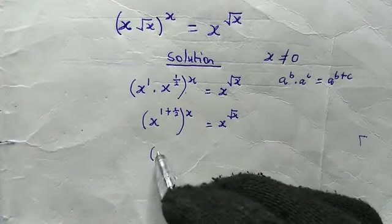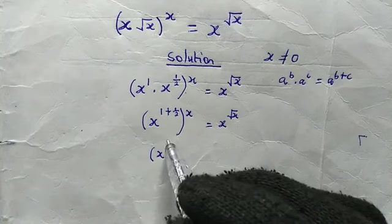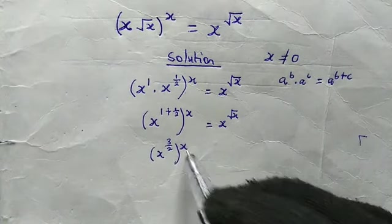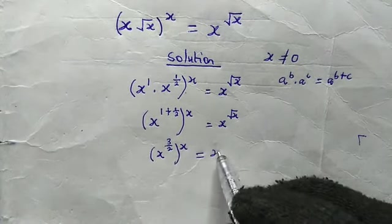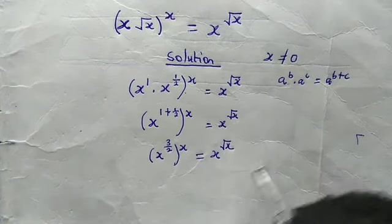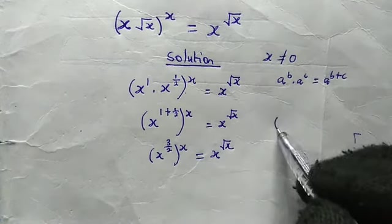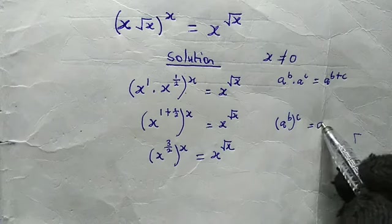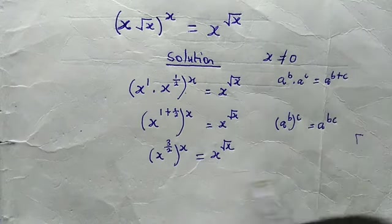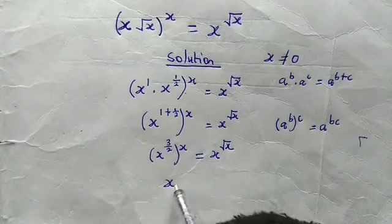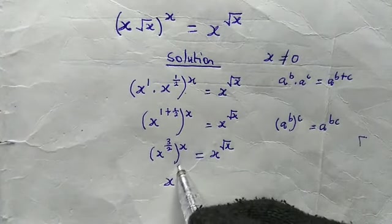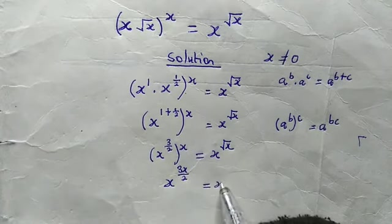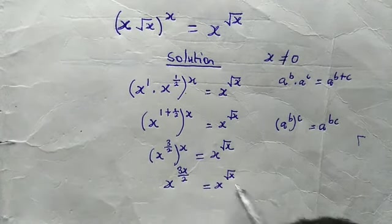From here, inside the bracket we have x to the power of 1 plus 1 over 2, which gives us 3 over 2, then raised to the power of x, giving us x^(3/2) raised to x. Recalling the property (a^b)^c = a^(b times c), this becomes x to the power of 3 over 2 times x, giving us 3x over 2. This is equal to x raised to the power of root x.